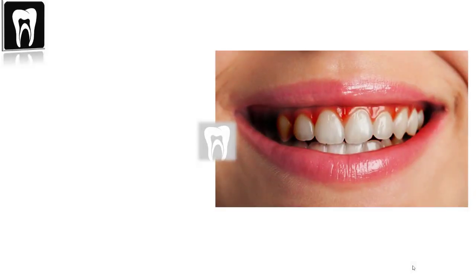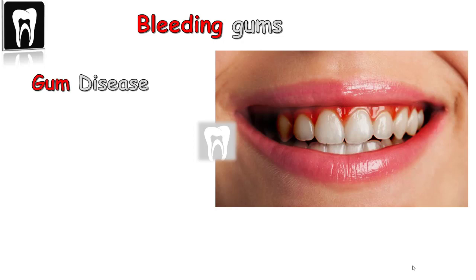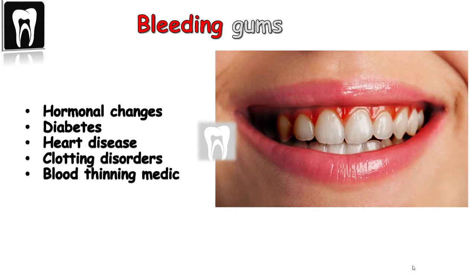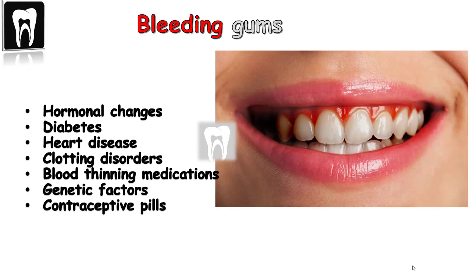At the end, figure out why your gums are bleeding. Bleeding gums aren't always a symptom of gum disease — though that's the most common reason. Bleeding gums can be a symptom of other medical issues unrelated to dental hygiene, such as hormonal changes, diabetes, heart disease, clotting disorders, blood-thinning medications, genetic factors, or contraceptive pills. If you suspect your bleeding gums are related to something other than poor brushing and flossing habits, see your doctor.